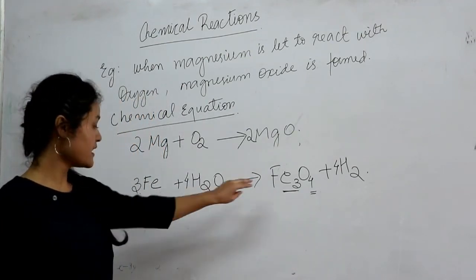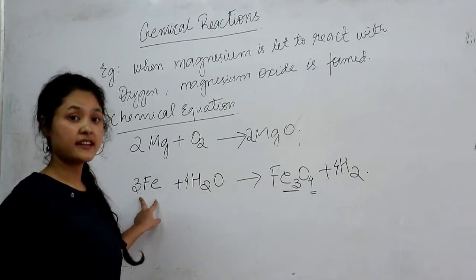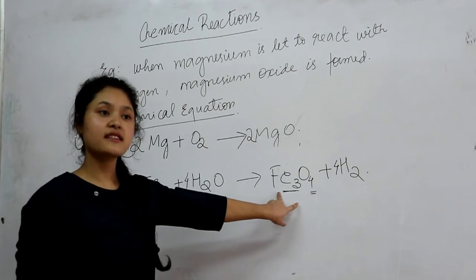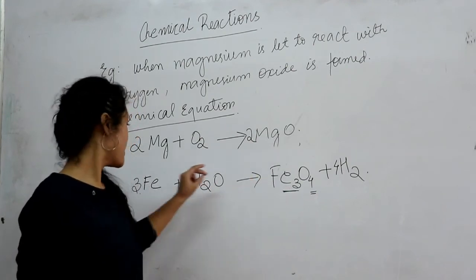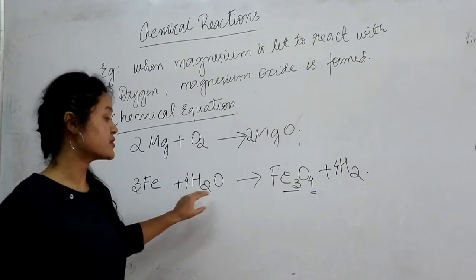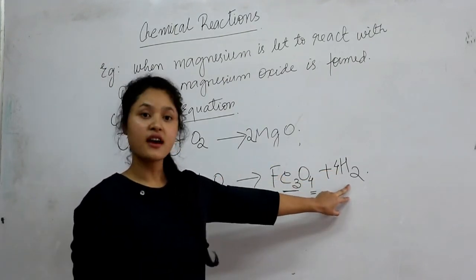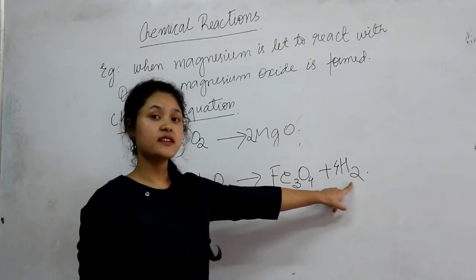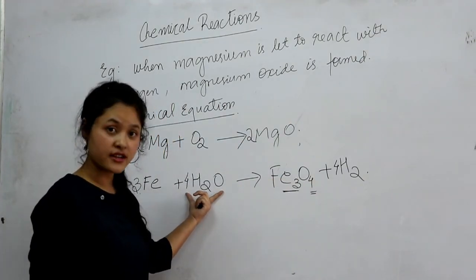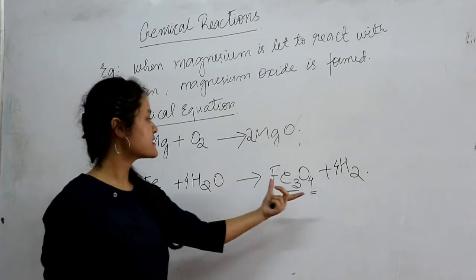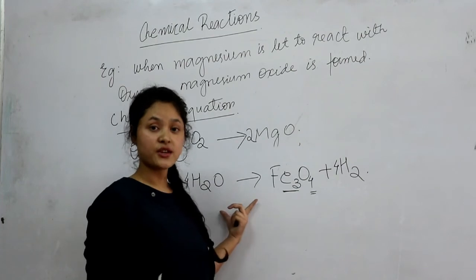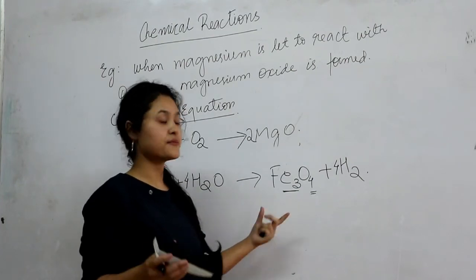Let us verify: iron has three atoms on the reactant side, and three on the product side — balanced. Hydrogen on the reactant side is four into two, which is eight, and on the product side hydrogen is also eight — balanced. Oxygen on the reactant side is four, and on the product side is also four — balanced. So the equation is balanced.